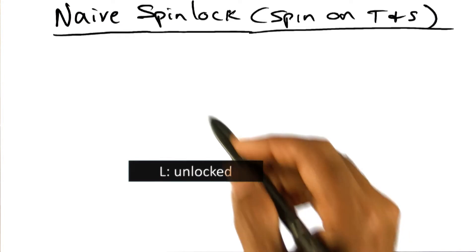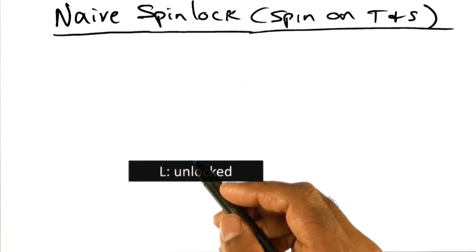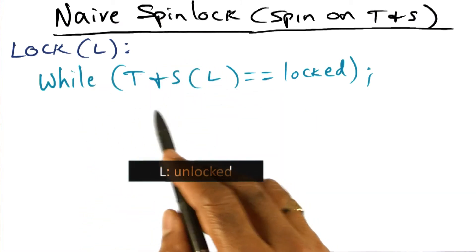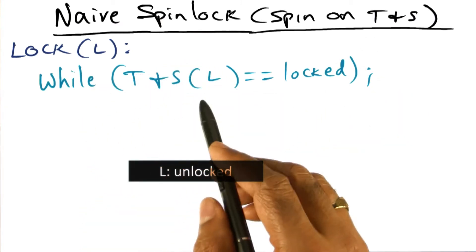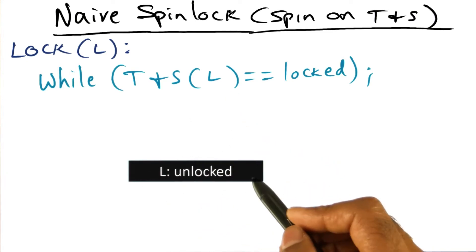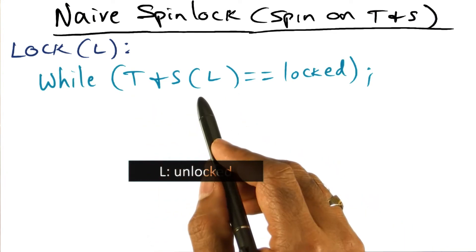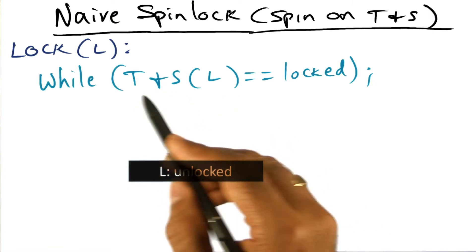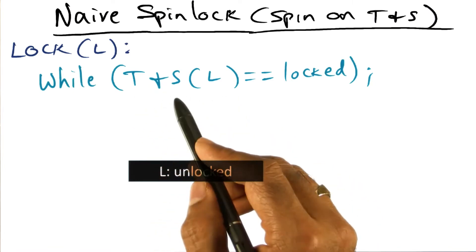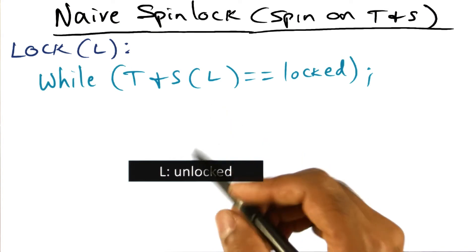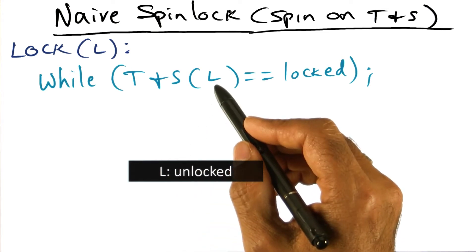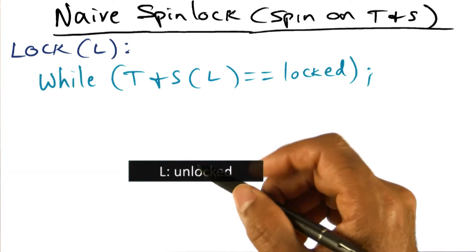The way to implement this naive spin lock algorithm is the following. What you do is you go in and check, using test and set primitive, the memory location L. When you call this lock primitive, the lock primitive executes this instruction test and set of L. What that is going to do is it's going to return the old value from L and set it to the new value, which is locked.